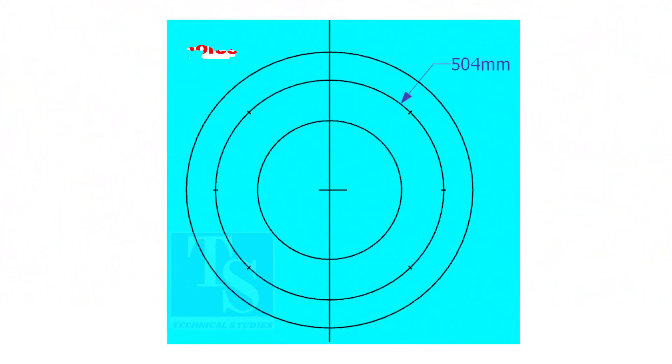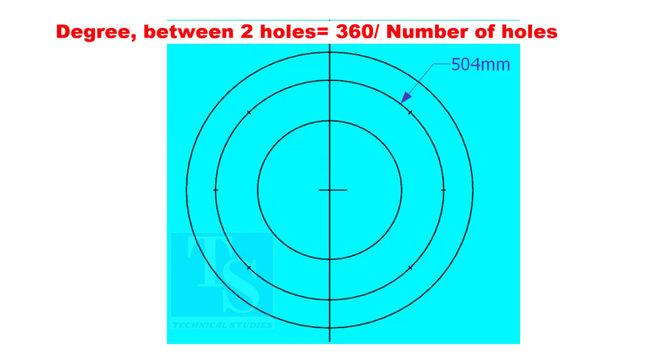Since the number of the holes is 8, divide the PCD into 8 equal parts. To divide the circle easily and accurately, let us find the chord length of the holes. If you divide 360 by the number of holes, you will get the angle between two holes.